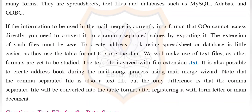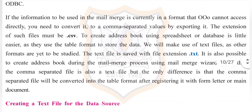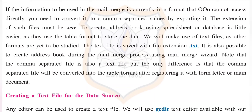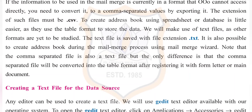If the information to be used in the mail merge is currently in a format that OpenOffice.org cannot access directly, you need to convert it to comma-separated values by exporting it. The extension of such files must be .csv. Creating an address book using a spreadsheet or database is a little easier, as they use the table format to store data. We will make use of text files, as the other formats are yet to be studied. The text file is saved with the extension .txt. It is also possible to create an address book during the mail merge process using the mail merge wizard. Note that the comma-separated file is also a text file, but the difference is that it will be converted into table format after registering it with the main document.